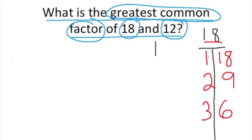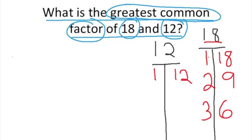Now let's find the factors of 12. Starting with our smallest factor of 1, we know that 1 times 12 will give us 12. We also know that 2 and 6 will give us 12, and we know that 3 times 4 will give us 12.